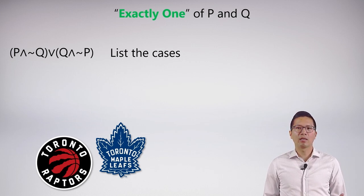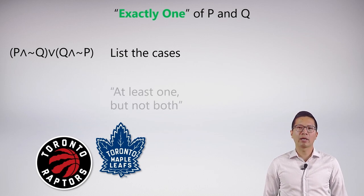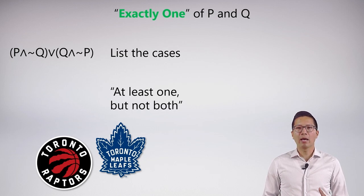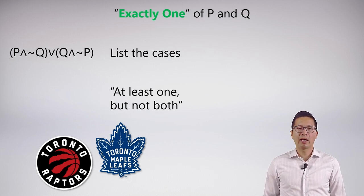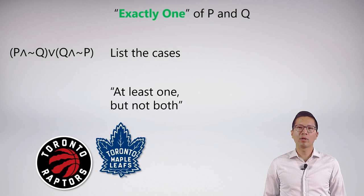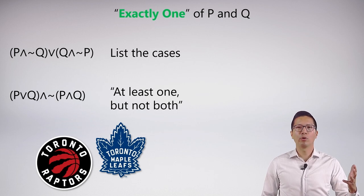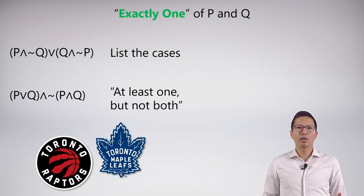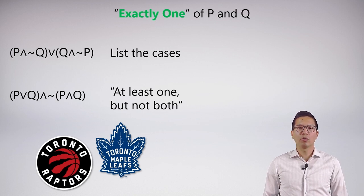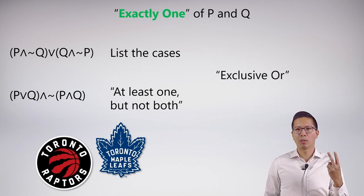Another way of thinking about exactly one is: at least one of them will win, but not both. We already know how to symbolize both of these things — at least one is just P or Q, and 'but not both' uses the conjunction and the not-both expression we've learned. Notice that these symbolizations also express the exclusive OR: one or the other, but not both.